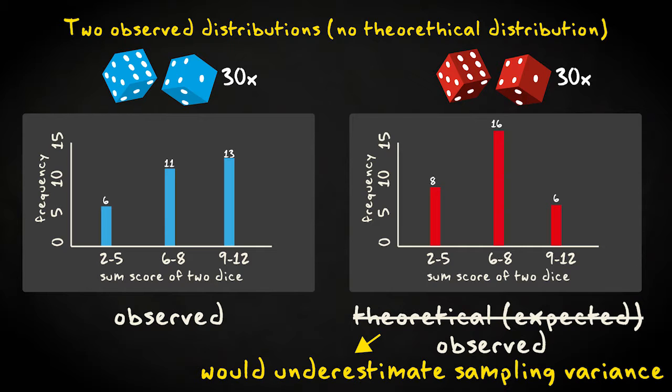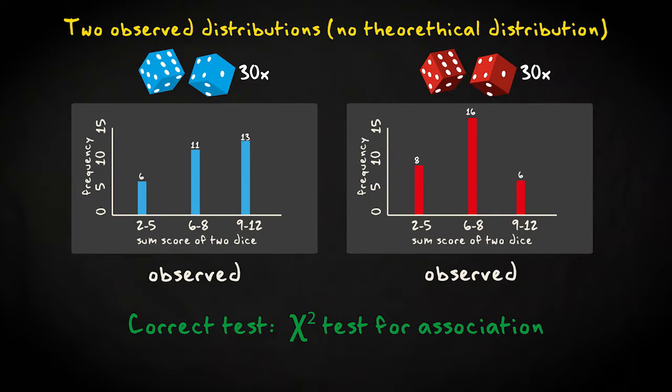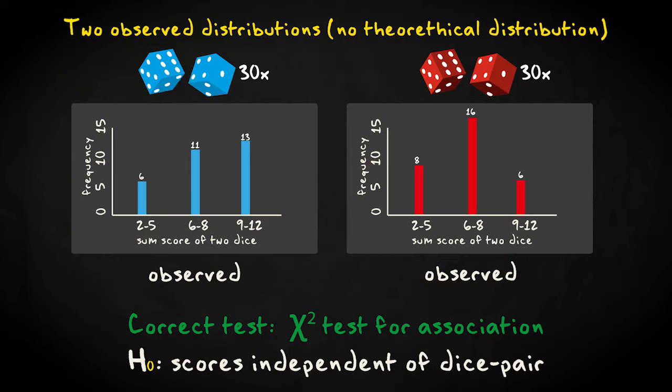The correct way to deal with this is to apply a test for association, which is testing the same question as a test for goodness of fit if you have just two categories in one dimension. For our case of throwing two pairs of dice, we could phrase the null hypothesis as the distribution you get is unrelated to the pair of dice you use.